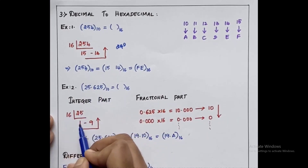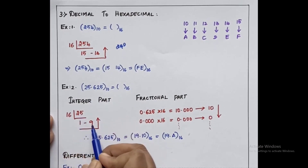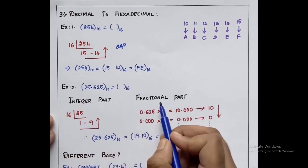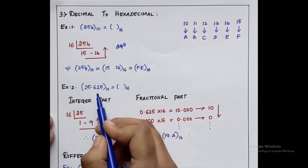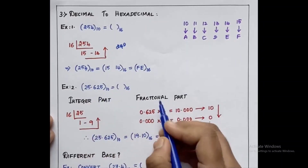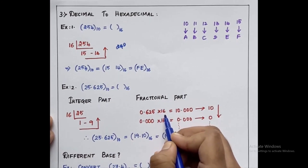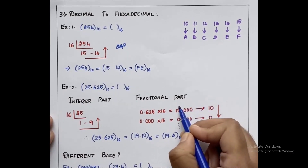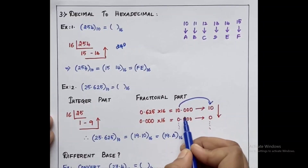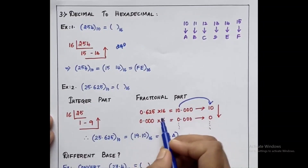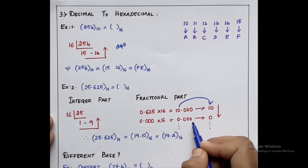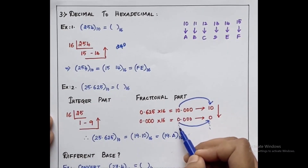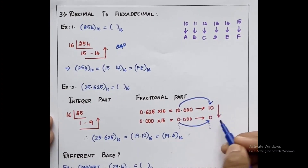For the integer part 25, we divide by the base value 16: 16 ones are 16, remainder 9. Take the arrowhead moving upwards. For the fractional part, as per the rule we multiply by the base value: 0.625 into 16 gives 10.0. We keep 10 aside. The remaining value after the decimal is 0, so 0 into 16 gives 0. We stop the multiplication here and draw the arrow mark moving downwards.